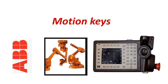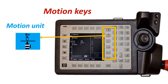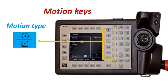Our next topic is Motion Keys. Motion Unit: press this key to jog the robot or other mechanical units. Motion Type: press this key to select how the robot should be jogged — reorient or linear.